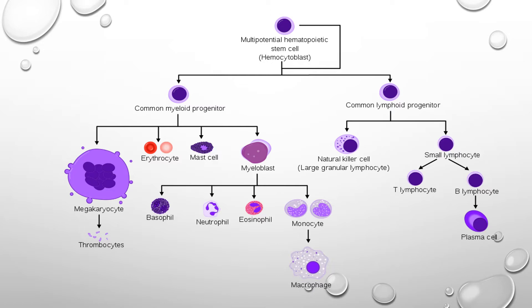Common lymphoid progenitor cells produce lymphocytes. Natural killer cells are larger than new lymphocytes. Small lymphocytes are divided into T lymphocytes and B lymphocytes. T lymphocytes help the immune response. B lymphocytes originate from bone marrow, and when they mature, they colonize. When B lymphocytes are activated, they differentiate into plasma cells.